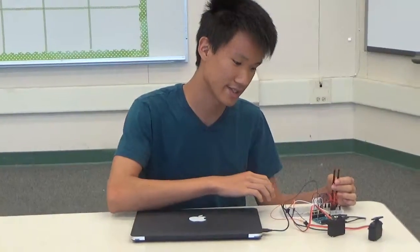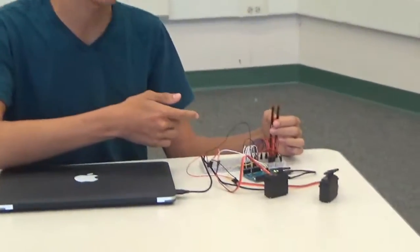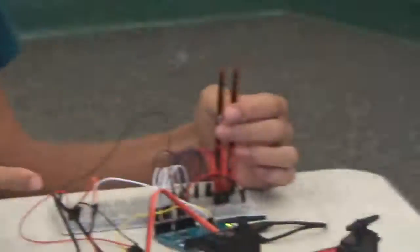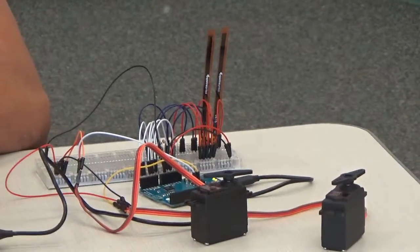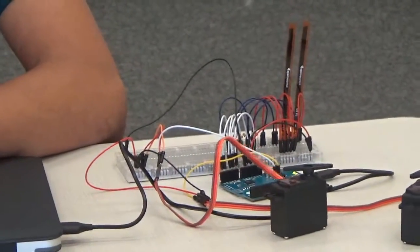So what I have so far is two flex sensors controlling the servos. The servos, when the project is done, will be controlling each finger.